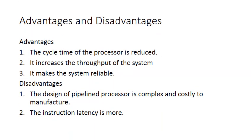Here are the advantages and disadvantages. The advantage of the pipeline is that the cycle time of the processor is reduced, which means you'll get information faster. It increases the throughput of the system, meaning you can request information faster, and it makes the system more reliable. The disadvantage is that the pipeline processor is complex and costly to manufacture, and also the instruction latency is higher.